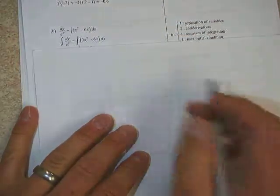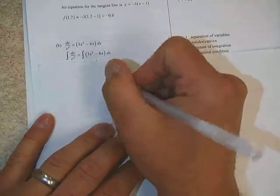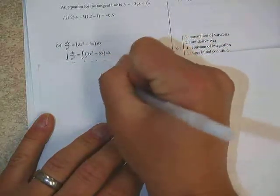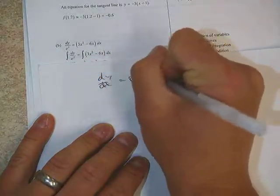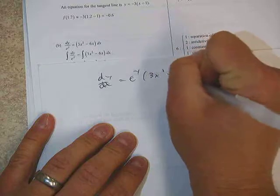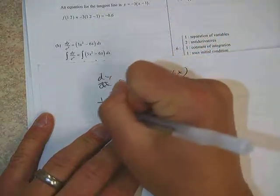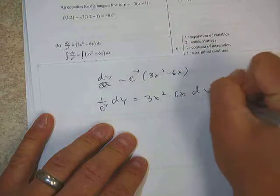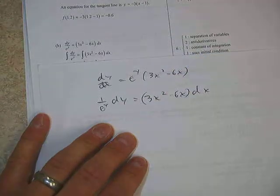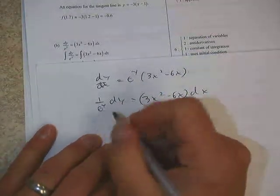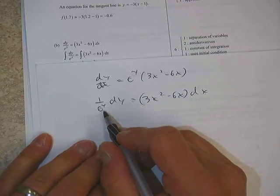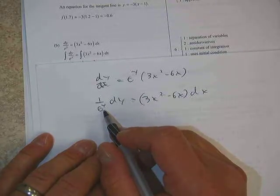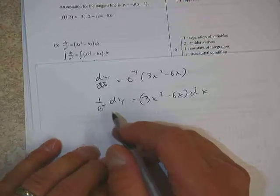All right. And in part B, it's a find the solution to the differential equation problem. So we're going to separate variables. So if we take our dy/dx equals e to the y times 3x squared minus 6x, we have 1 over e to the y dy over here, 3x squared minus 6x dx over here. Separating variables is worth a point.